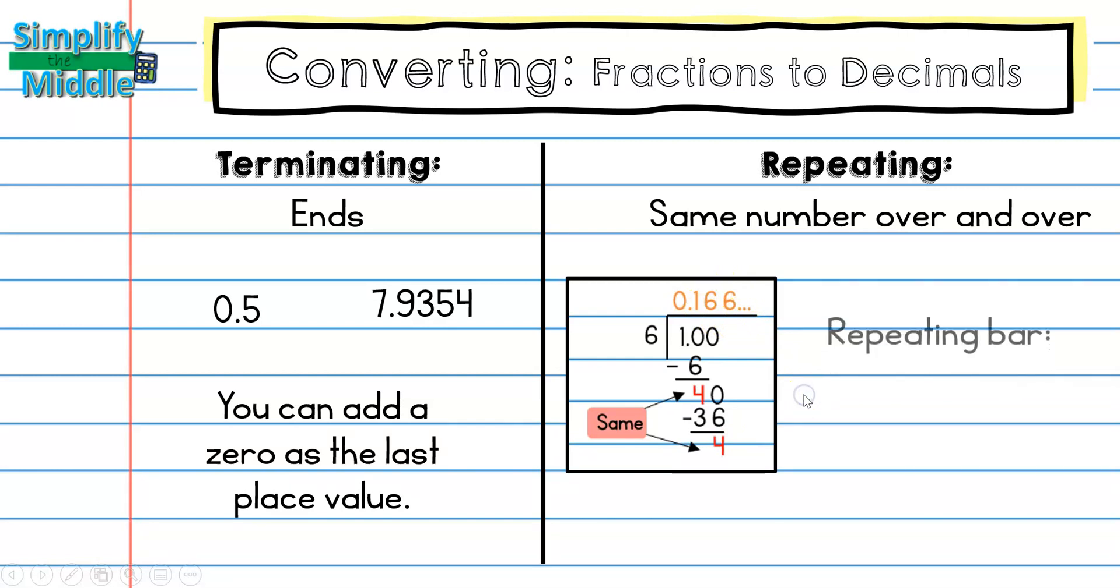There are two different ways I can write this. I can use a repeating bar or I can use three dots. In the problem I've used the three dots, but I'll show you both. With the repeating bar, it's very important to only put the repeating bar over the number that is repeating. Notice how the one did not repeat here. We wrote the one once and then we ended up just repeating the six. That's what this answer shows.